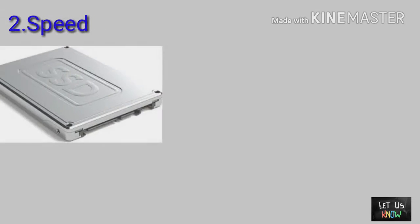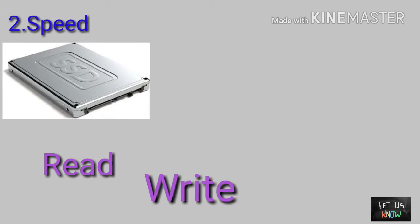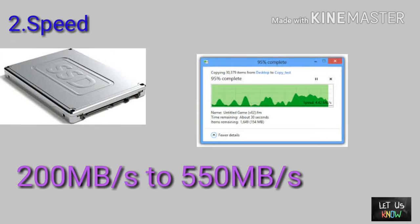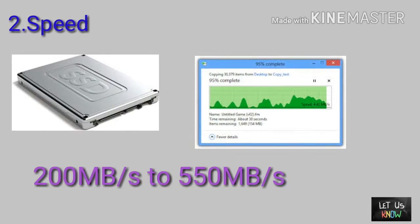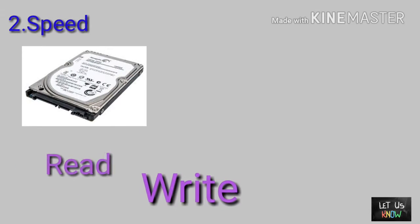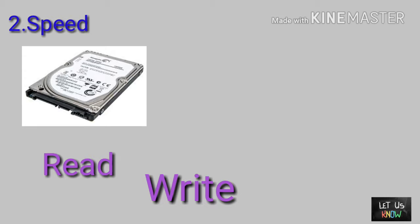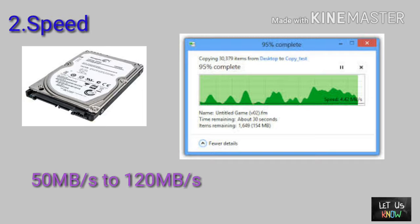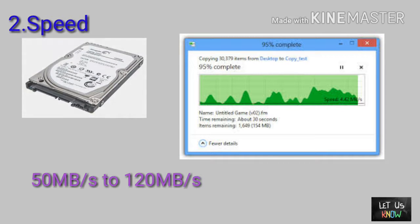The second: speed. The solid state drive file read and write speed is higher than the hard disk drive. Its speed is up to 200 Mbps to 550 Mbps, while the hard disk drive read and write speed is lower, at up to 50 Mbps to 120 Mbps.